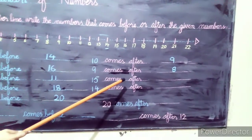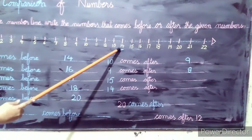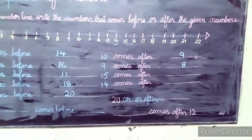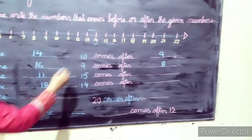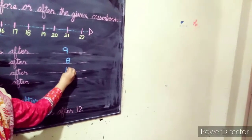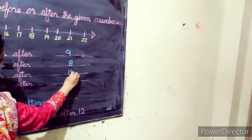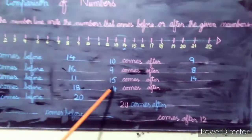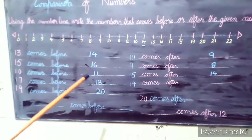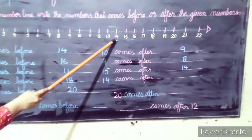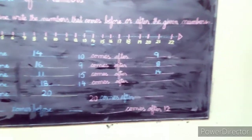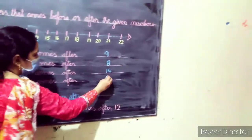Next, 15 comes after 14. What comes after 14? 15 comes after 14. So 13 comes before 14, and 15 comes after 14.